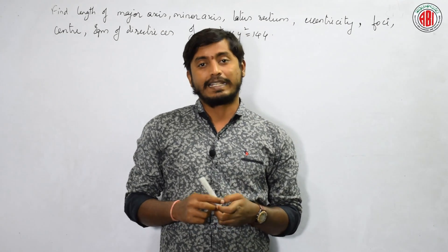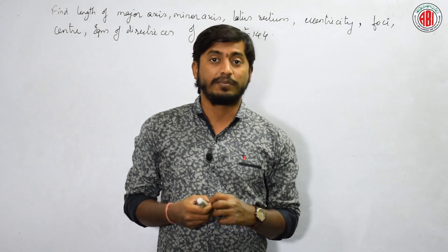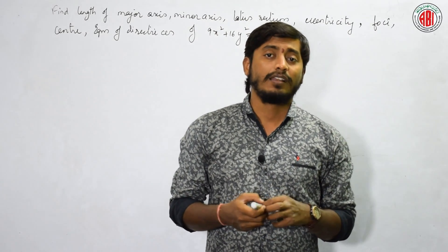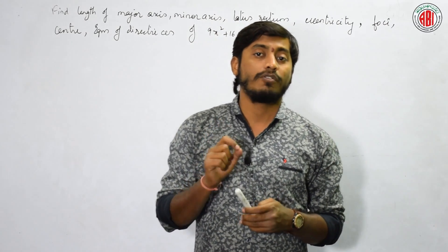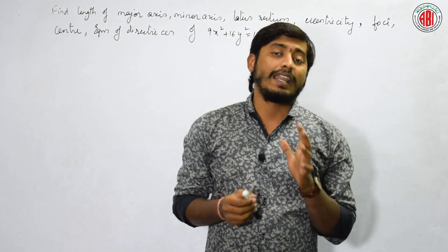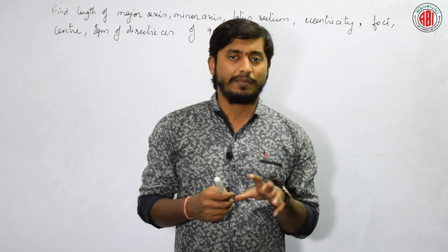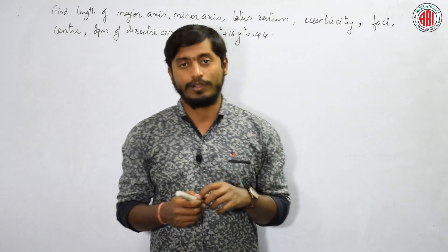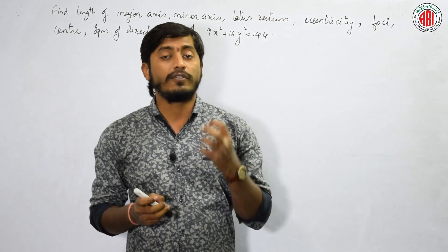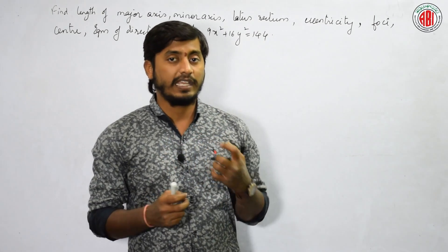Hello everyone. Myself Sai Prasad from Ahlabeth High School and Junior College. Welcome to this series of lectures for Intermediate Second Year Maths B. We started a discussion with the chapter on ellipse. We learned the basics of how to find the standard equation of an ellipse, derived it, and learned how, when the equation is given, to find all the parameters such as center, focus, and all those. Today we are going to do all the problems of how to find all the parameters of an ellipse when the equation is given.